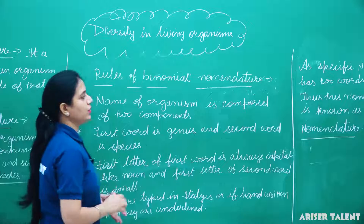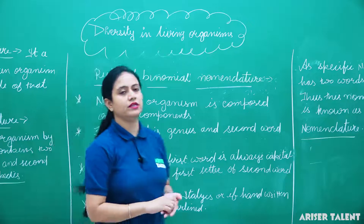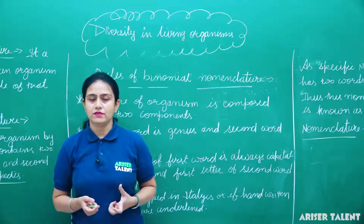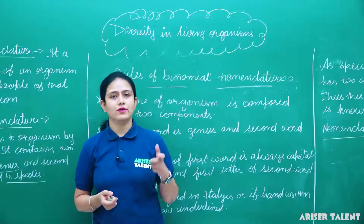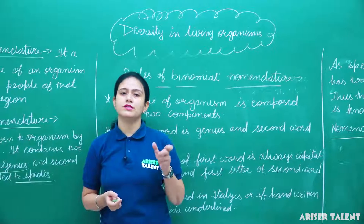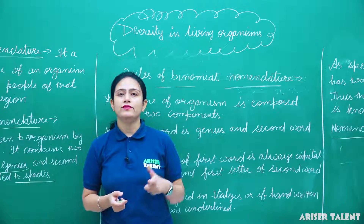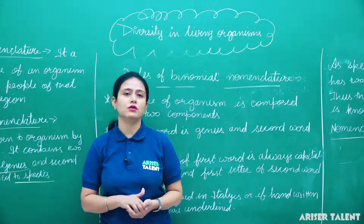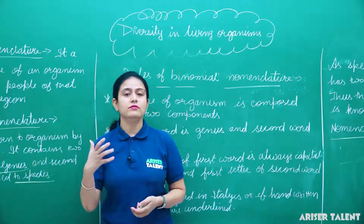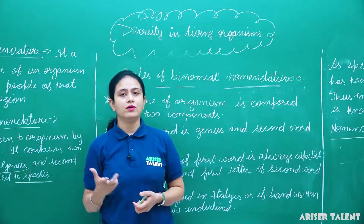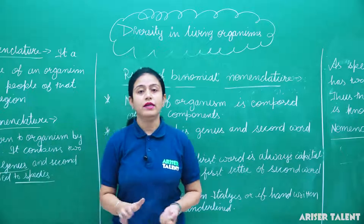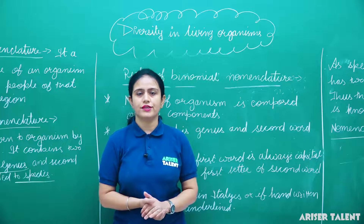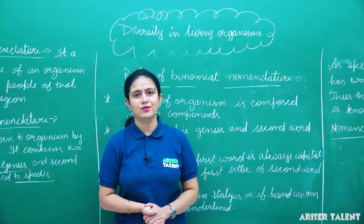So, today in this lecture we studied about diversity and biodiversity, we studied about taxonomy, and we studied about nomenclature — how animals or plants are given a particular name. In our next lecture, we will talk about classification. Thank you.